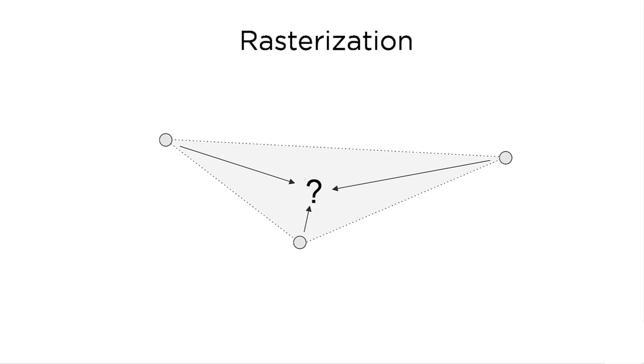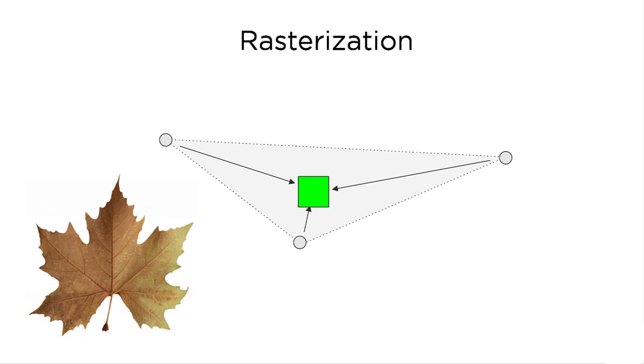The reason this is possible is because the renderer interpolates the UVs across the surface of the face. This is like blending the three UV values based on the distance from the vertices. Once the interpolated UV value is found, it is used to sample the texture and give that pixel a color.